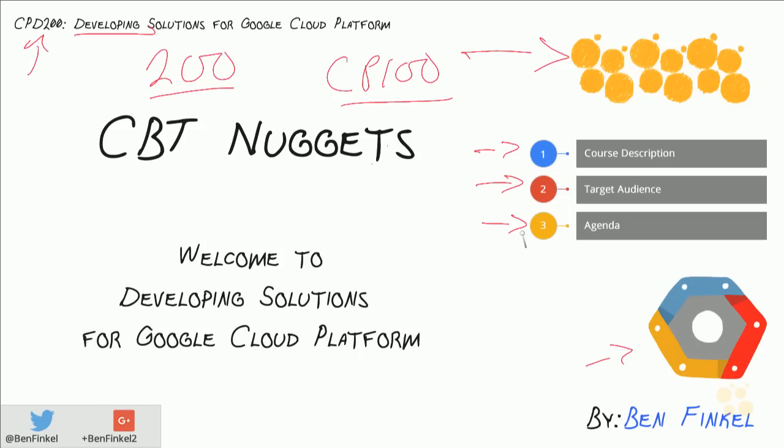We're going to finish by showing you how you can download some official courseware from Google that includes labs, slides, and code samples in both Python and Java, so that you can work through CPD 200 from the official Google material at your own pace if you want.